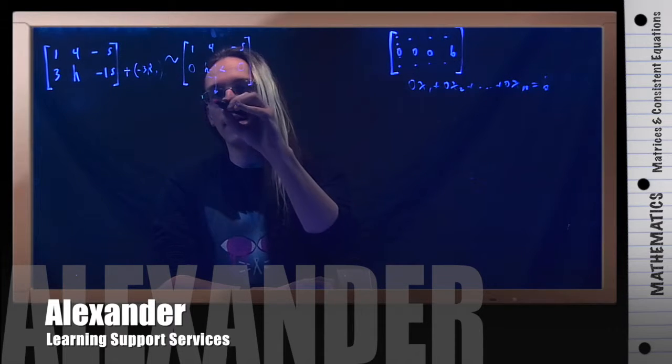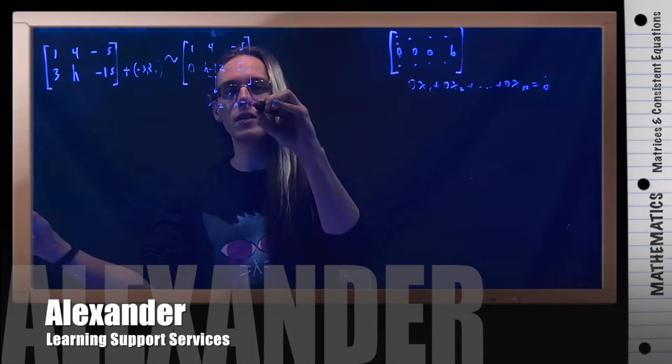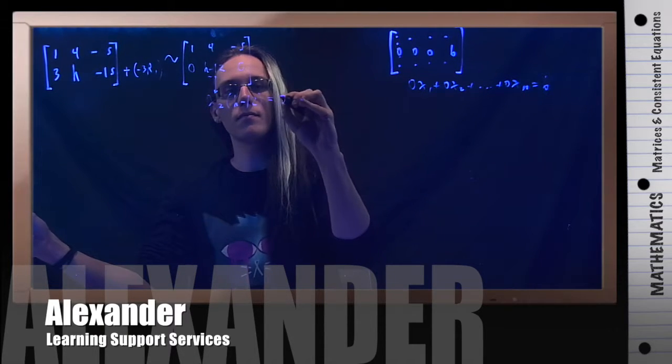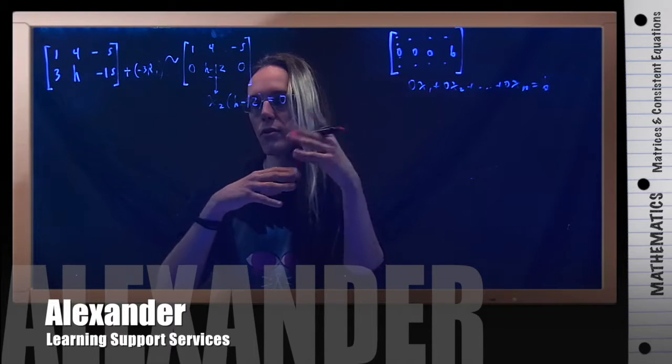I have that x2 times h minus 12 is equal to 0. So really, when I am thinking about the values that h could be, as far as what is relevant, I want to think, well, there are two cases.